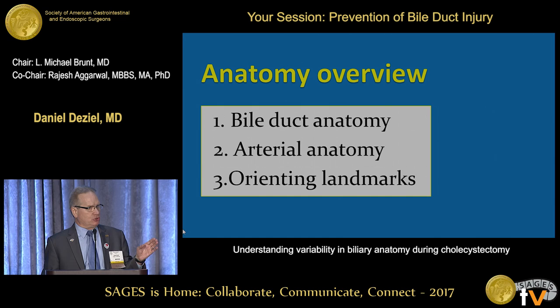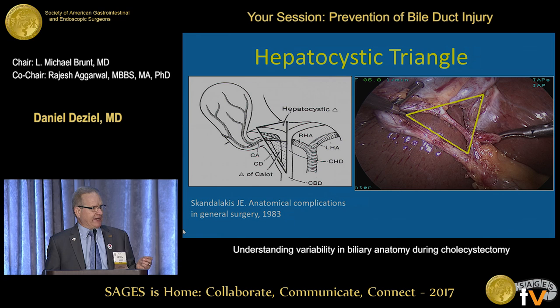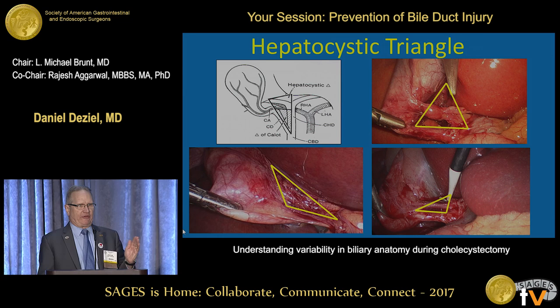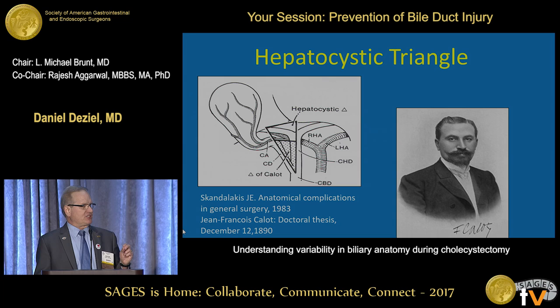In bile duct and arterial anatomy, and also point out some standard landmarks that are useful for orientation. We'll be using the term hepatocystic triangle. This is the area between the cystic duct and the gallbladder, the liver, and the hepatic duct. This is the high-priced real estate where bile duct and vascular injuries occur. The size and the shape of this triangle will vary with retraction and during the course of dissection.